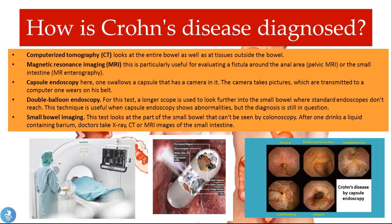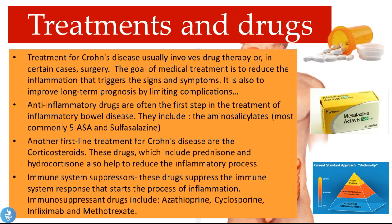Treatment for Crohn's disease usually involves drug therapy or in certain cases surgery. The goal of medical treatment is to reduce inflammation and improve long-term prognosis by limiting complications. Anti-inflammatory drugs are often the first step, including aminosalicylates — most commonly 5-ASA, also called mesalazine, and sulfasalazine. Corticosteroids such as prednisone and hydrocortisone are another first-line treatment. Immune system suppressors such as azathioprine, cyclosporine, infliximab, and methotrexate suppress the immune response that initiates inflammation.